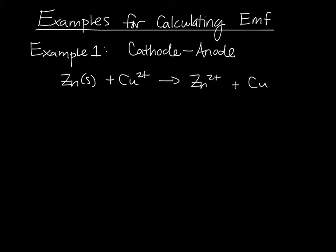To calculate the voltage in a particular chemical cell, all you need to do is figure out which metal is the cathode and which one is the anode. Then we can use a table of standard reduction potentials and we'll take the number for the cathode and subtract the number for the anode.